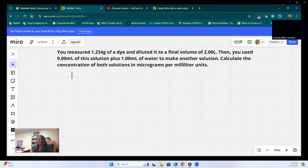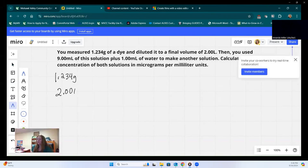First off, I like to write down what I know about the problem first. I know that there's 1.234 grams of my dye, and I also know that there's 2.00 liters. That's going to be the first solution. My second solution, there's kind of two problems in this. The second one is going to use this mixture.